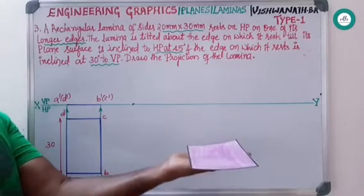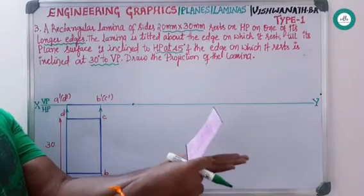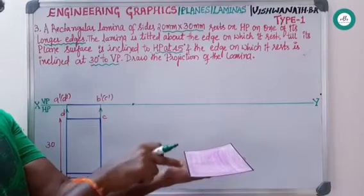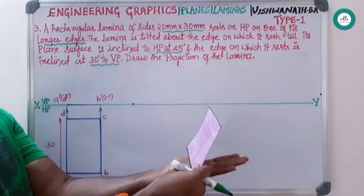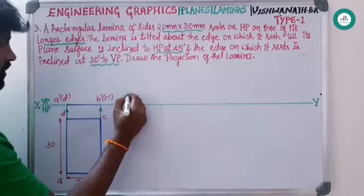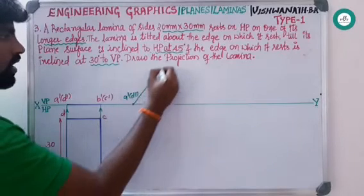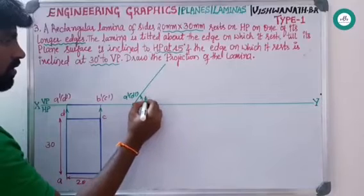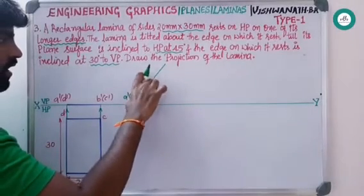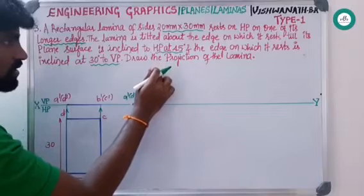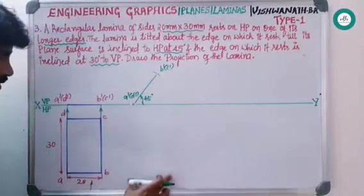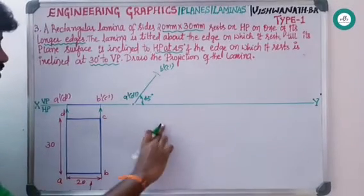For the second condition, please make a note: 'lamina makes an angle', 'the surface makes an angle', or 'it is tilted about the resting edge' — all these sentences mean the same. Here it is making an angle of 45 degrees. Take one convenient point, name this A dash, D dash, draw a line for 45 degrees, measure A to B, cut an arc, remove the extra part, name this B dash, C dash. Project from these two points downwards and project to the right side to draw the top view.